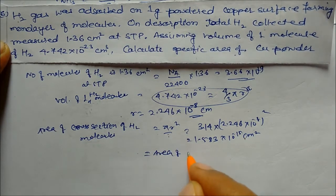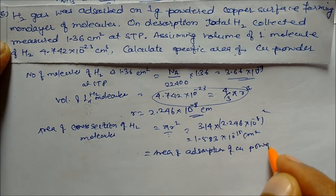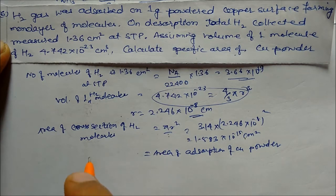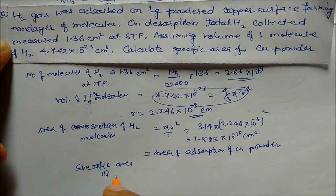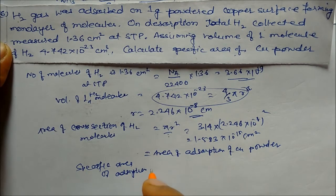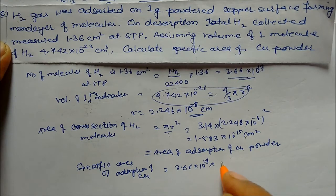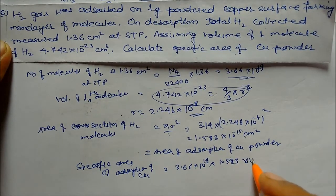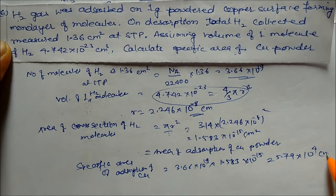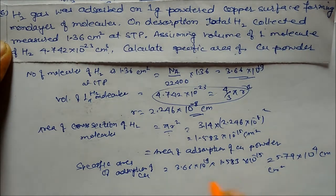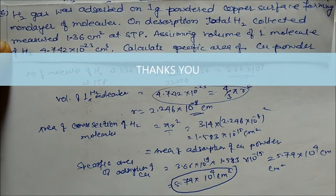Specific area of copper powder equals number of molecules multiplied by cross-sectional area per molecule: 3.66 into 10¹⁹ multiplied by 1.583 into 10⁻¹⁵, giving approximately 5.7 into 10⁴ cm squared per gram. So the specific surface area of copper powder for adsorption is about 5.7 into 10⁴ cm squared.